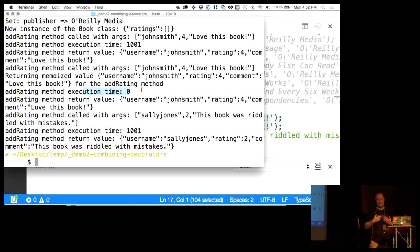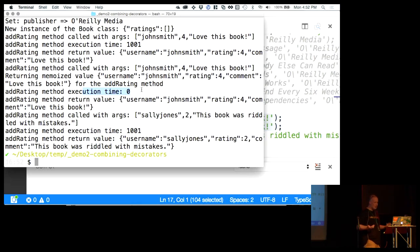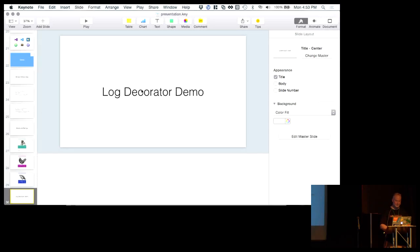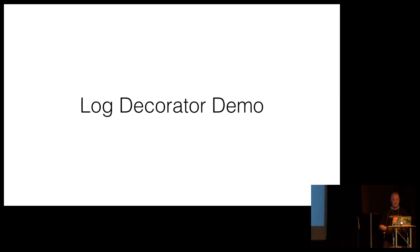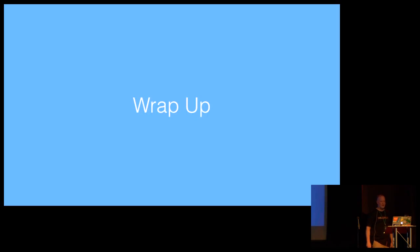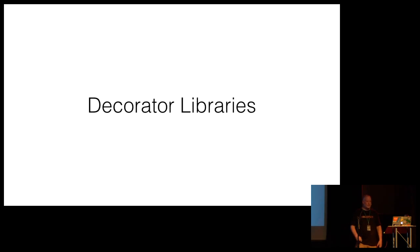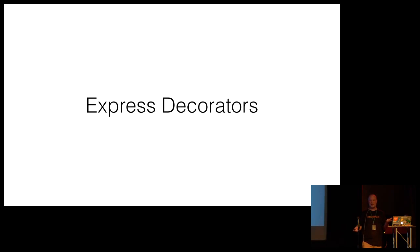The idea here is that you can imagine libraries of decorators that are building blocks — you can compose behavior or create behavior in the application through composition. Most of the time you're not going to be creating your own decorator libraries. Maybe on a big project, but you're generally going to be consuming them, like we showed in the Angular 2 example. These are all NPM packages I found online.